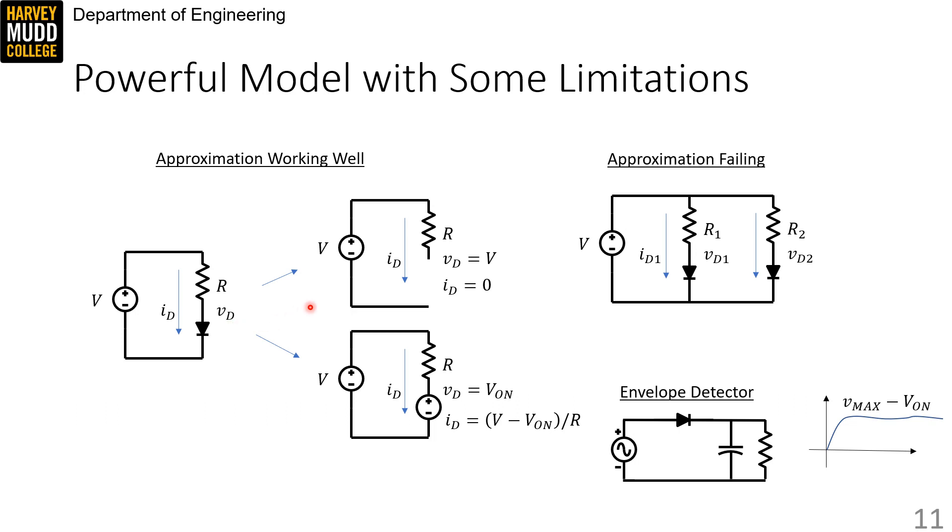The upper circuit shows the diode in its non-conducting state, and if no current is passing through the diode, then ID is zero, and VD is V, because there's no drop across the resistor.